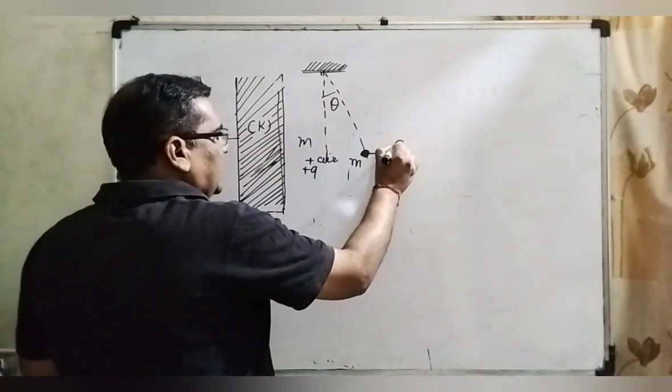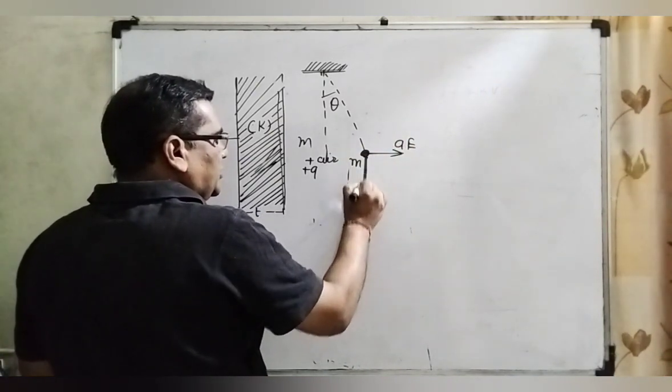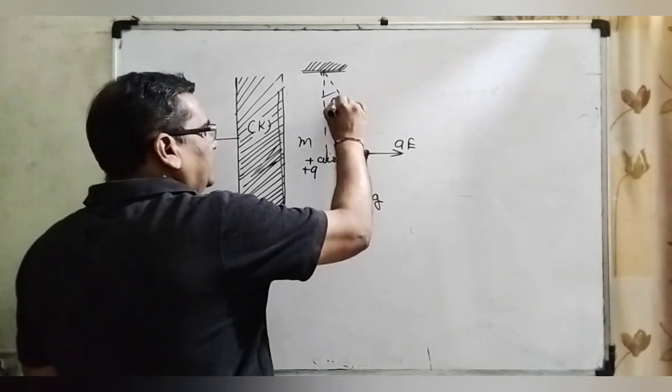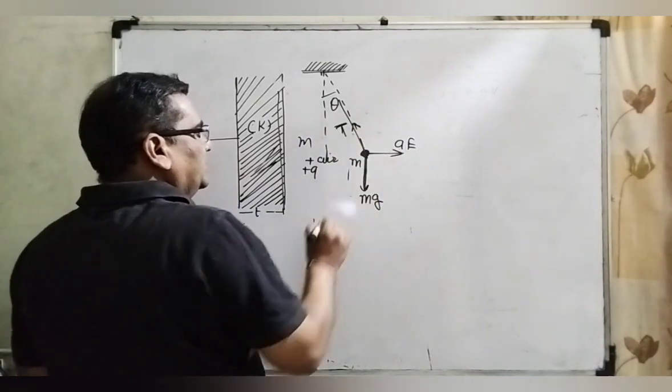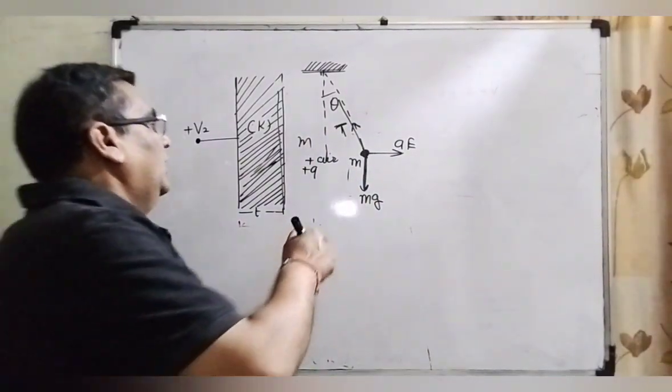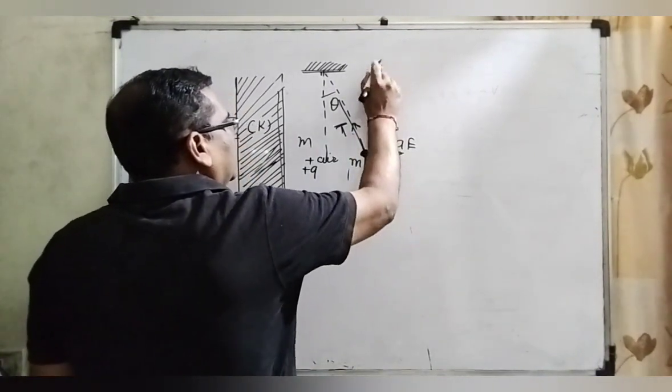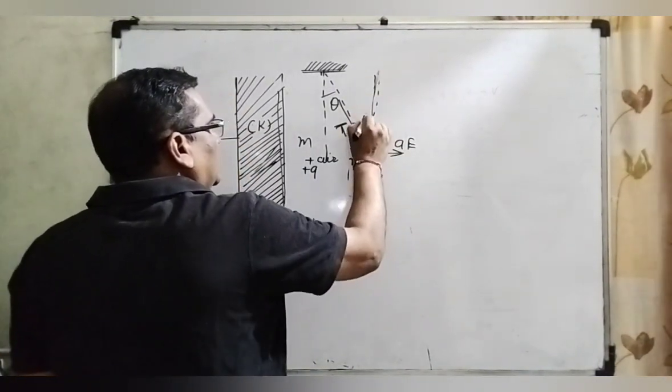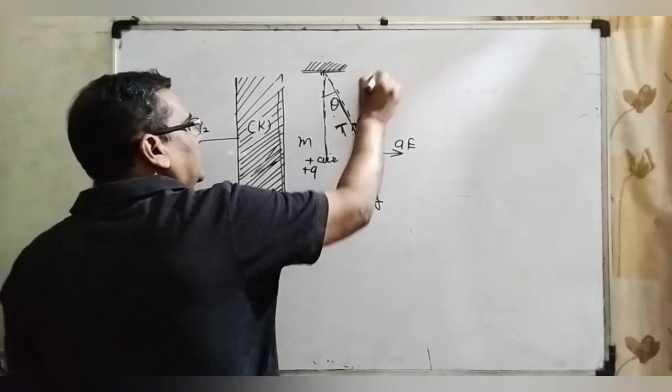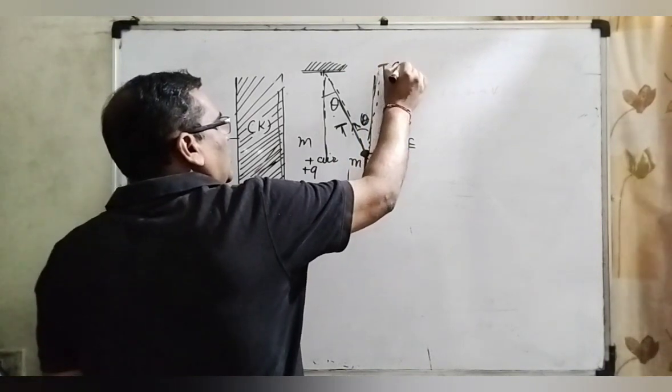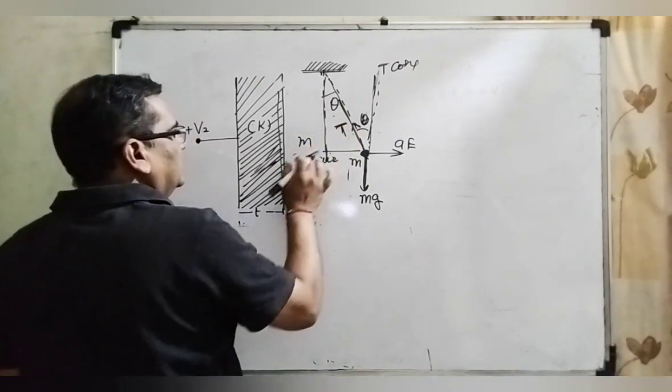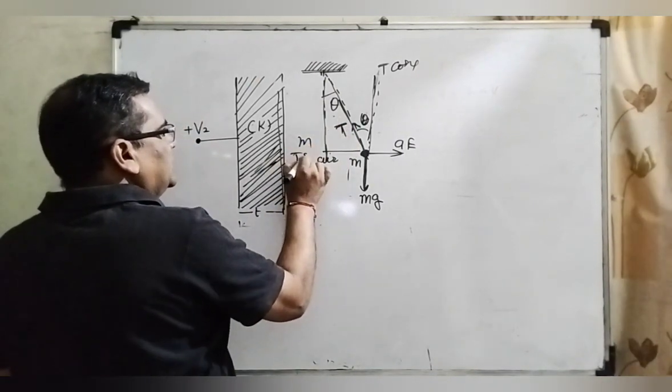So it is acted, this side is QE, downward direction is mg. So here is T, the tension. And this has two components considered. It is the theta angle, because this line and this line are parallel. So interior alternate angles theta, then becomes T cos theta, and here is T sin theta.